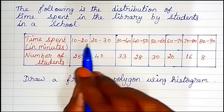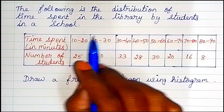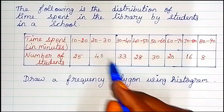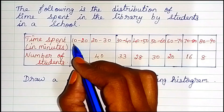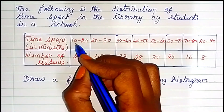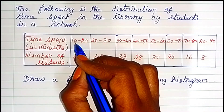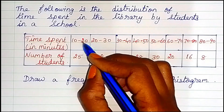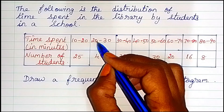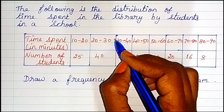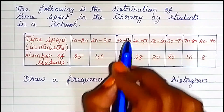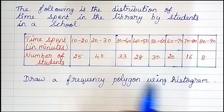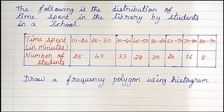This is a continuous frequency distribution. This is continuous — in the library the intervals are 10 to 20, 20 to 30. This is ending and next starting, so this is a continuous frequency distribution. So this is the first histogram.